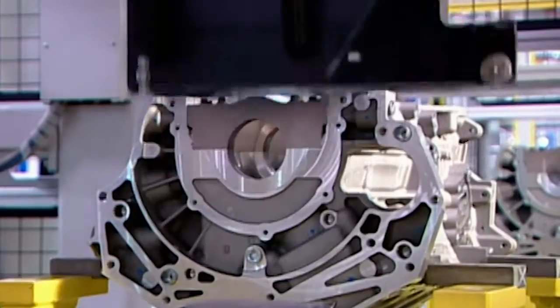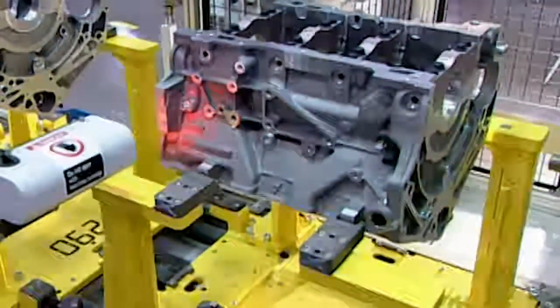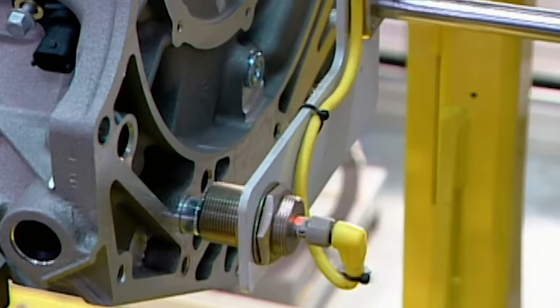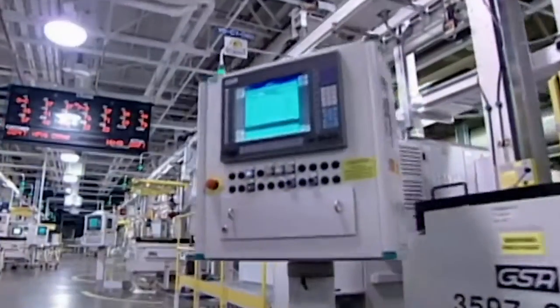After machining, the engine block travels upside down to the engine assembly line. When it arrives, a scanner records the block's traceability code, a barcode that enables the factory to track the block through every stage of production.